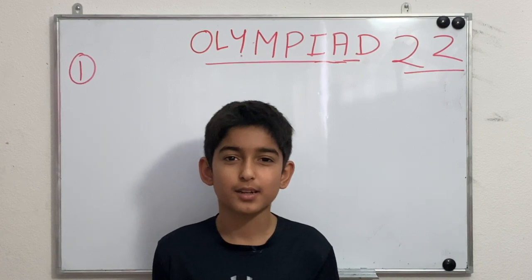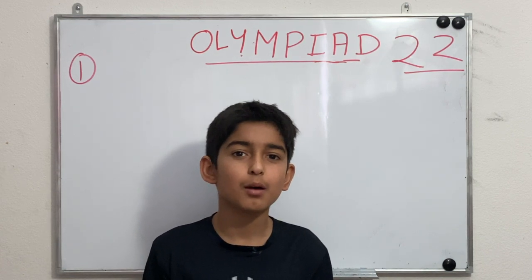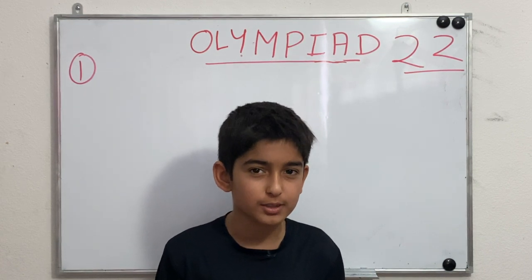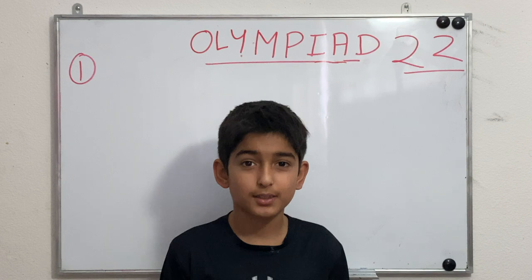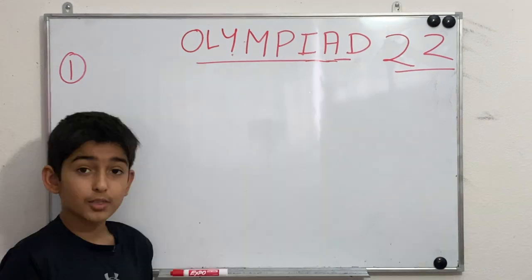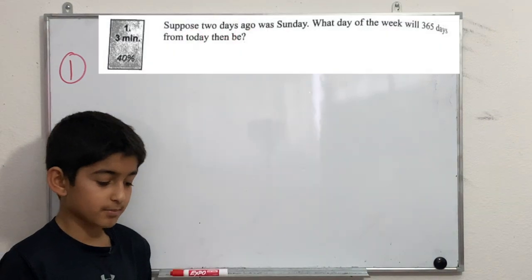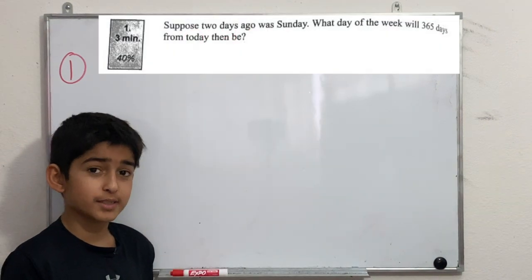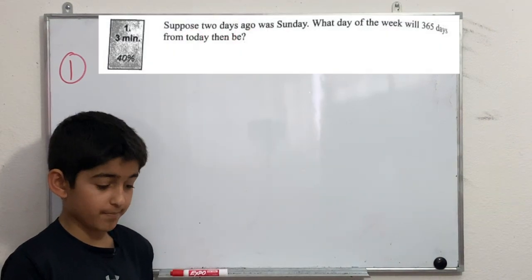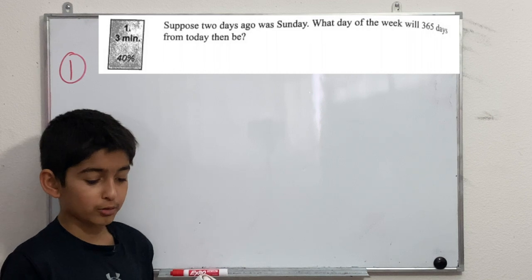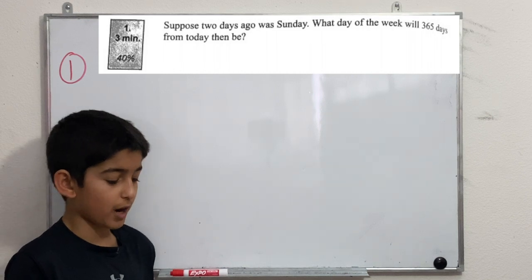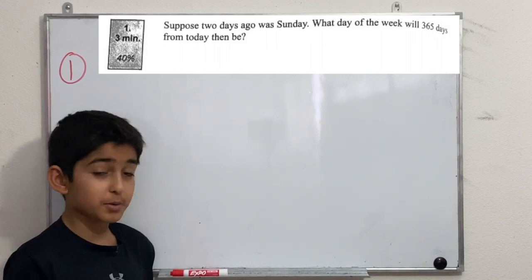Hey guys and welcome to Learning Math. Today I'll be going over the 22nd Olympiad, so let's get into it. The first problem says: suppose two days ago was Sunday — what day of the week will 365 days from today be?